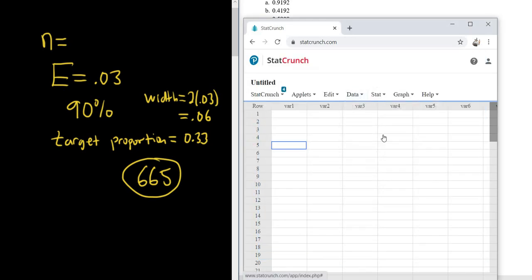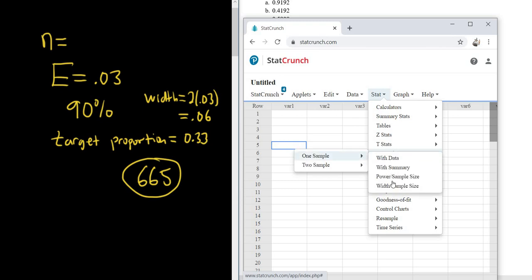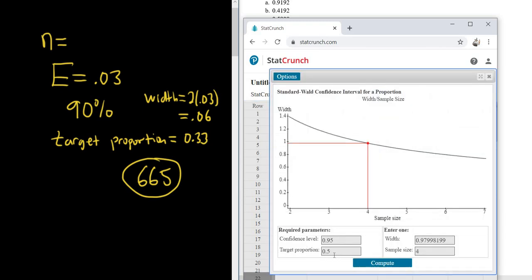Stat, Proportion Stats, one sample with sample size, and you see it's 0.5. So that's the default.